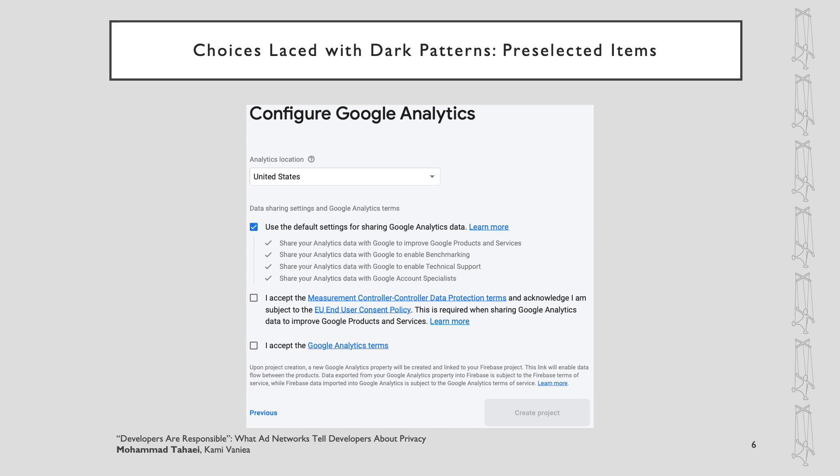It may be hard to tell by just looking at this interface that all four grayed-out items below the first option can also be selected or unselected. These four items will only turn into checkboxes if the developer unselects the first item. Even after that, the four items will still be pre-selected by default, and the developer must unselect all of them to presumably stop sharing data with Google Analytics.